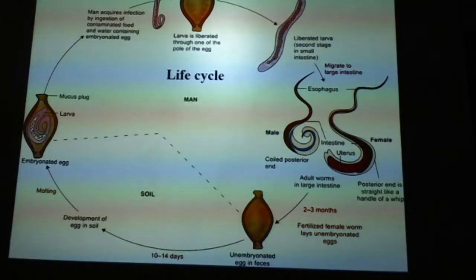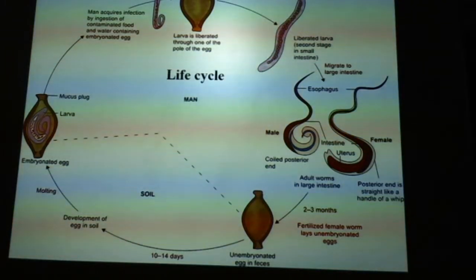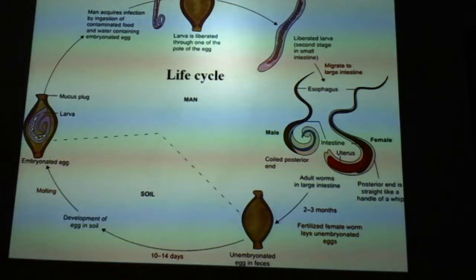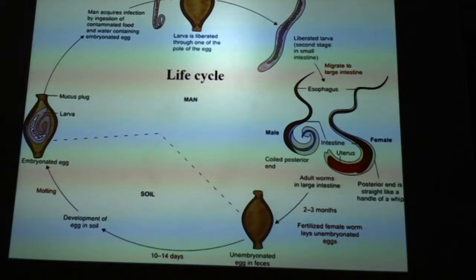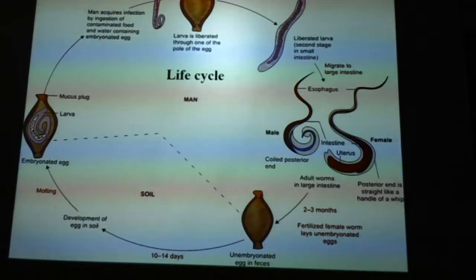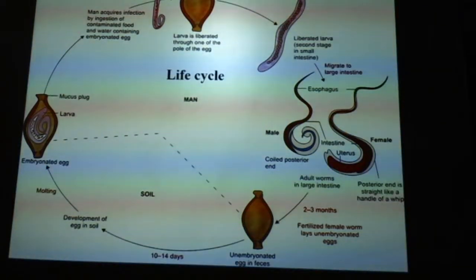Later, the larva migrates to the large intestine. In the large intestine, there will be male and female forms and reproduction. The adult worms stay in the large intestine. After two to three months, the fertilized female worm lays unembryonated eggs — there is no embryo in the egg at this stage. These eggs are passed through the feces of the infected host. From there, they may directly develop into embryonated eggs, or it takes around 10 to 14 days with some moltings.